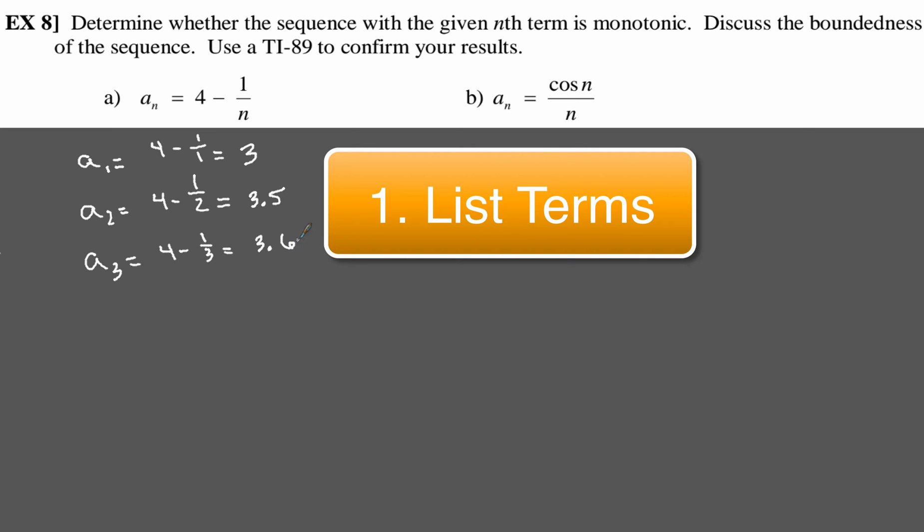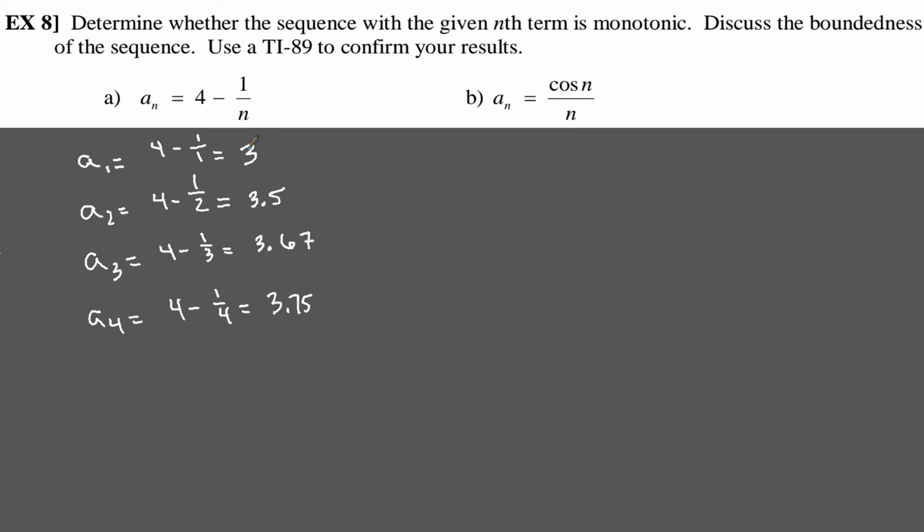Now if we keep going, our fourth term would be 4 minus 1 over 4. Now a fourth is 0.25, so this would end up being 3.75. Now notice, our terms are starting at 3, our first term, going to 3.5, 3.67, 3.75. So is the sequence monotonic? Yes, the sequence is monotonic because it starts with one term and increases from term to term to term.